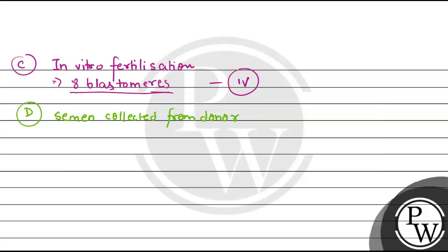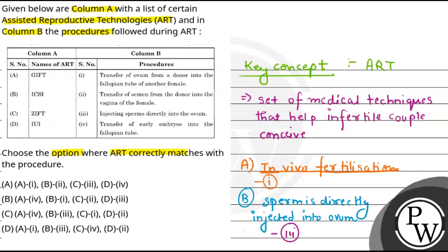The collected semen is then artificially introduced either into the vagina or into the uterus. So the correct match for D is ii.